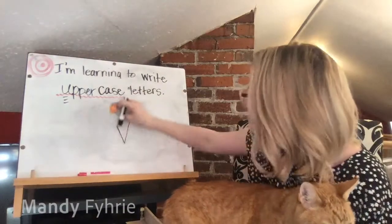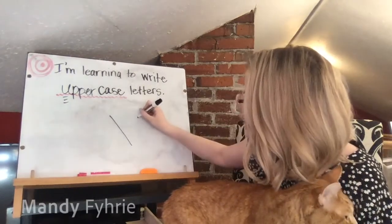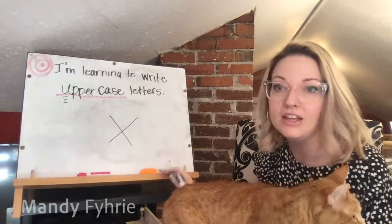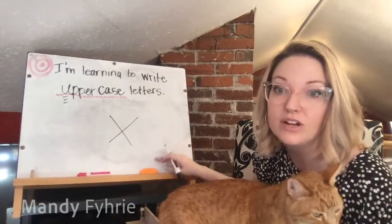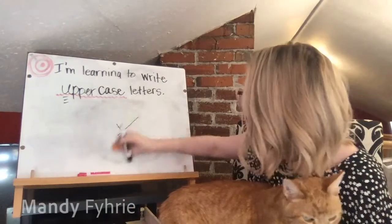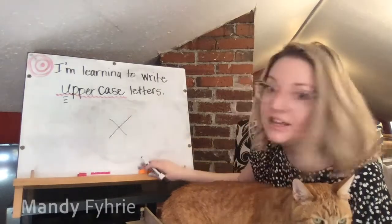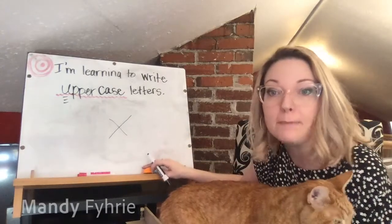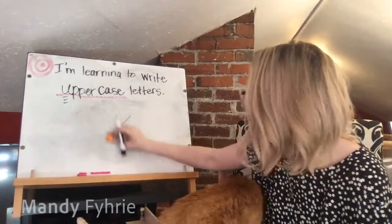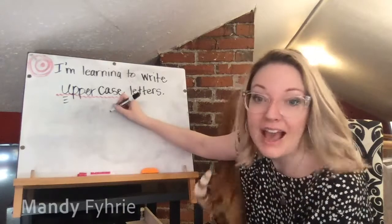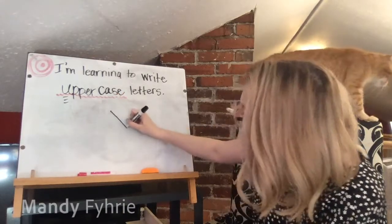Capital X: just like a lowercase x — slide down, then slide backwards so they cross. Make sure it crosses or it could look like a T or another letter. Capital X should be big. Slide, slide, and they cross.